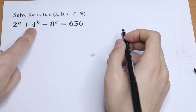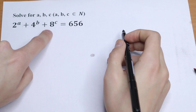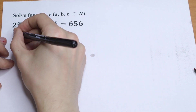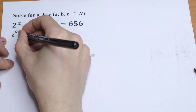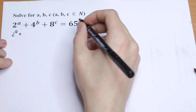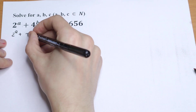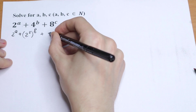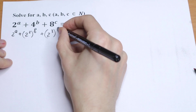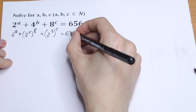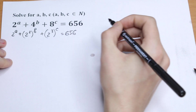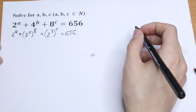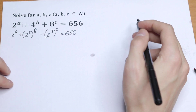This 4 can be written as 2 squared and this 8 can be written as 2 cubed. So we will have 2 to the power a, plus 4 written as 2 squared to the power b, and plus 2 cubed raised to the power c, equal to 656. We just write 4 as 2 squared and 8 as 2 cubed.